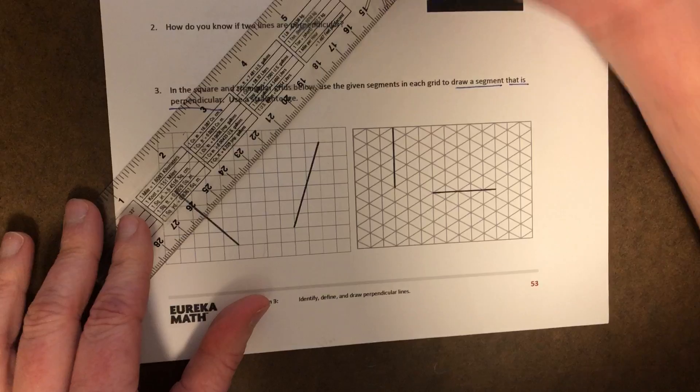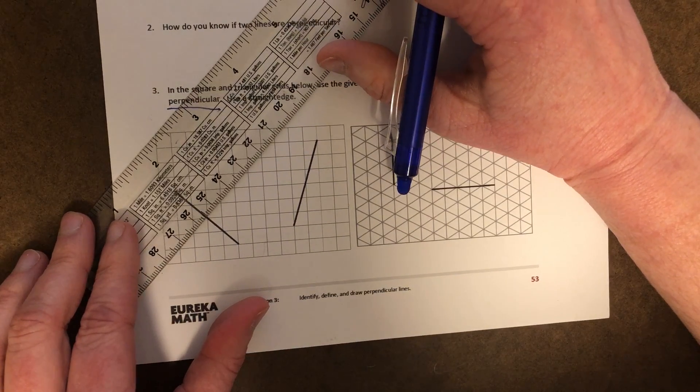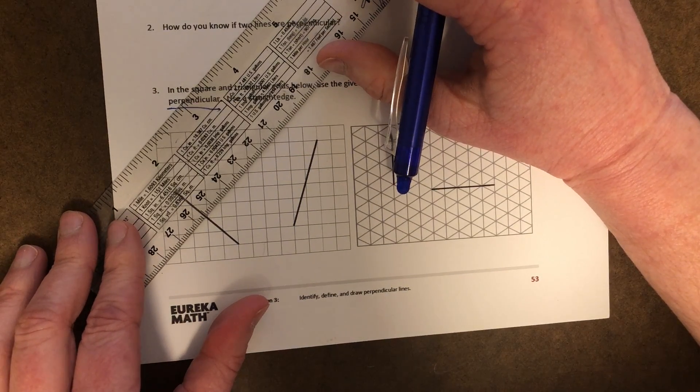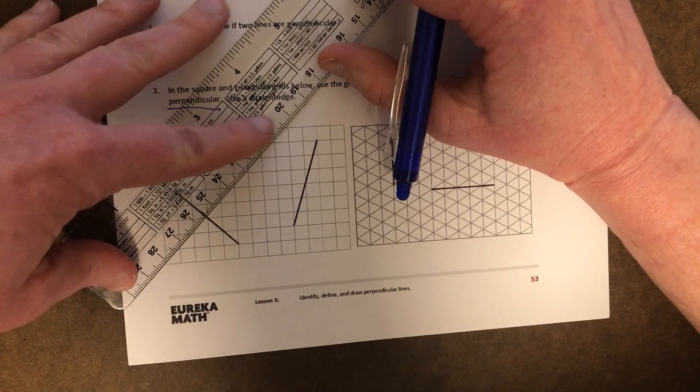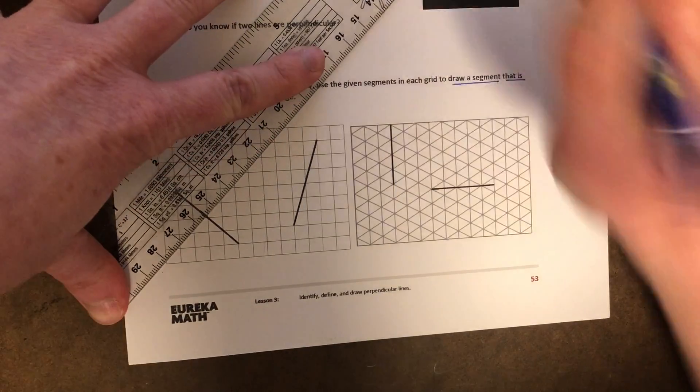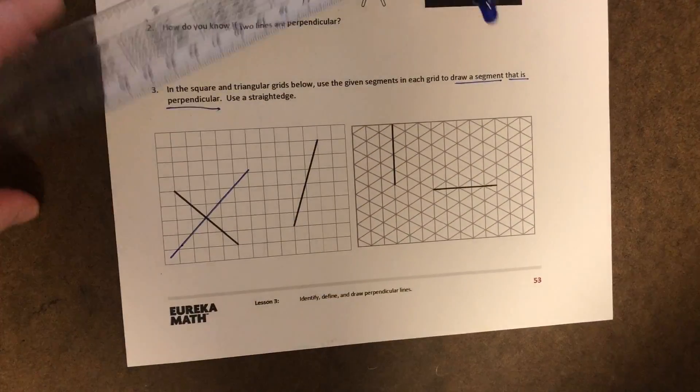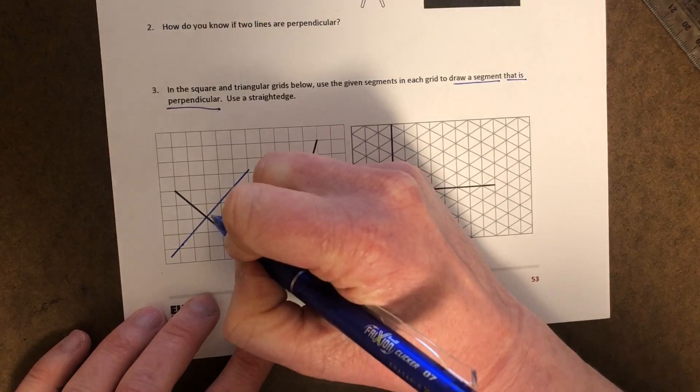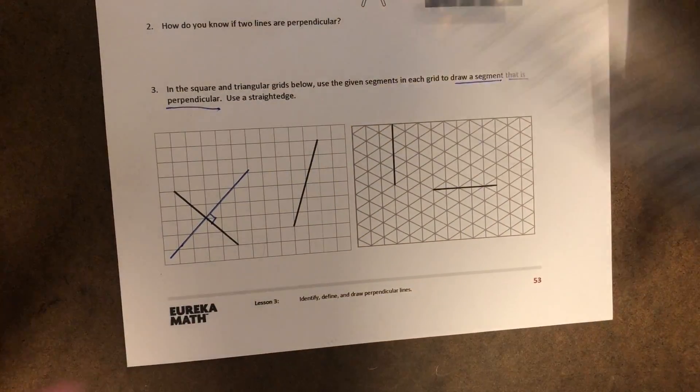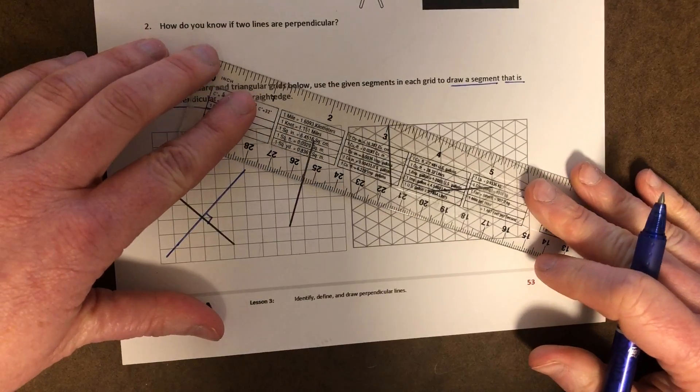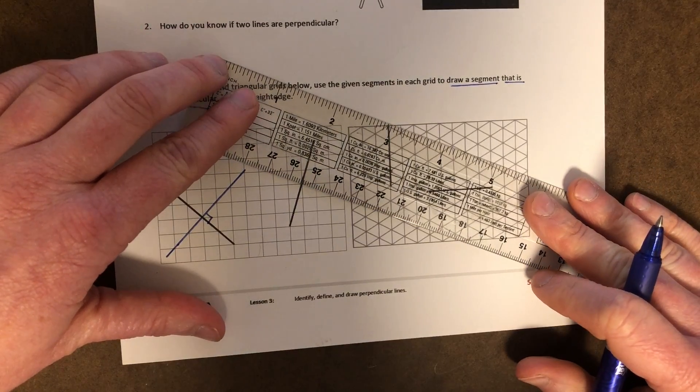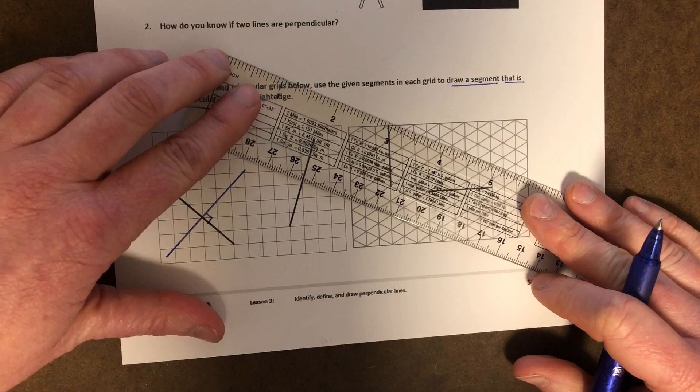I'm going to run my straight edge, just kind of diagonal on all these little squares. Kind of just run my pen this way through it. Oh, see, I have perpendicular lines. Same with this one. Kind of go diagonal through those squares.